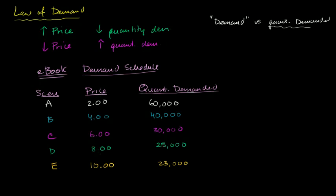So this relationship between, this shows the law of demand right over here. And this table that shows how the quantity demanded relates to price and vice versa, this is what we call a demand schedule. Now we can also, based on this demand schedule, draw a demand curve.